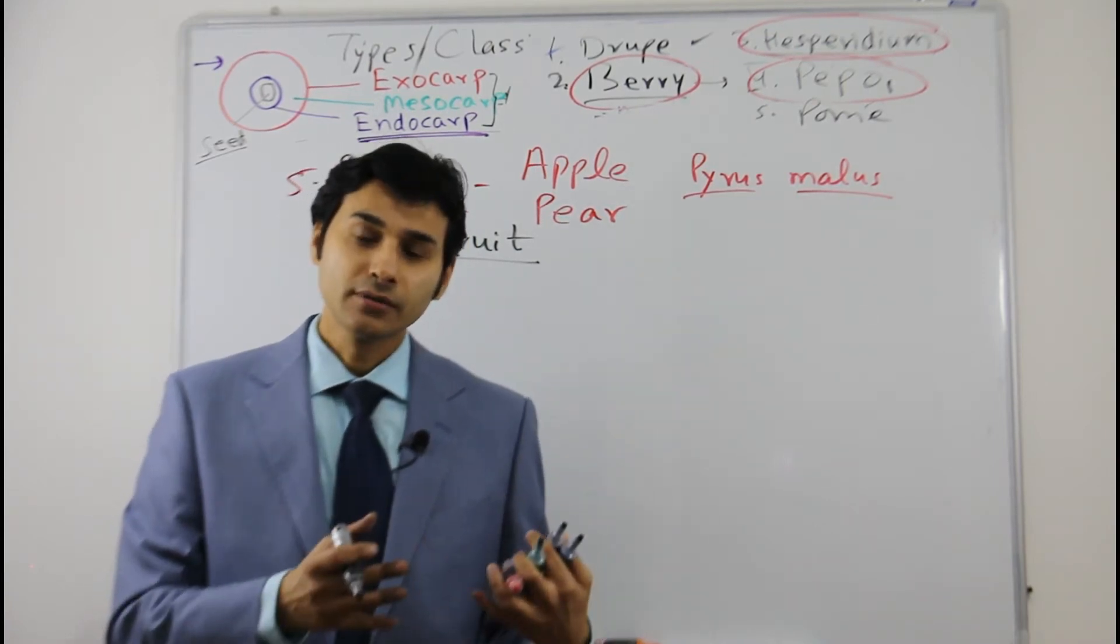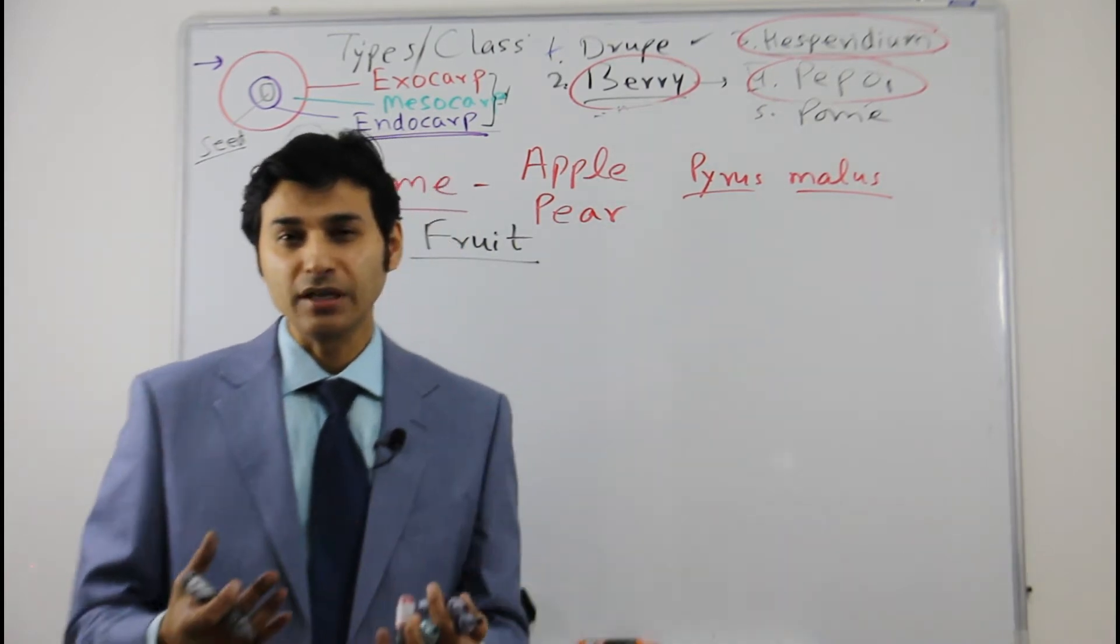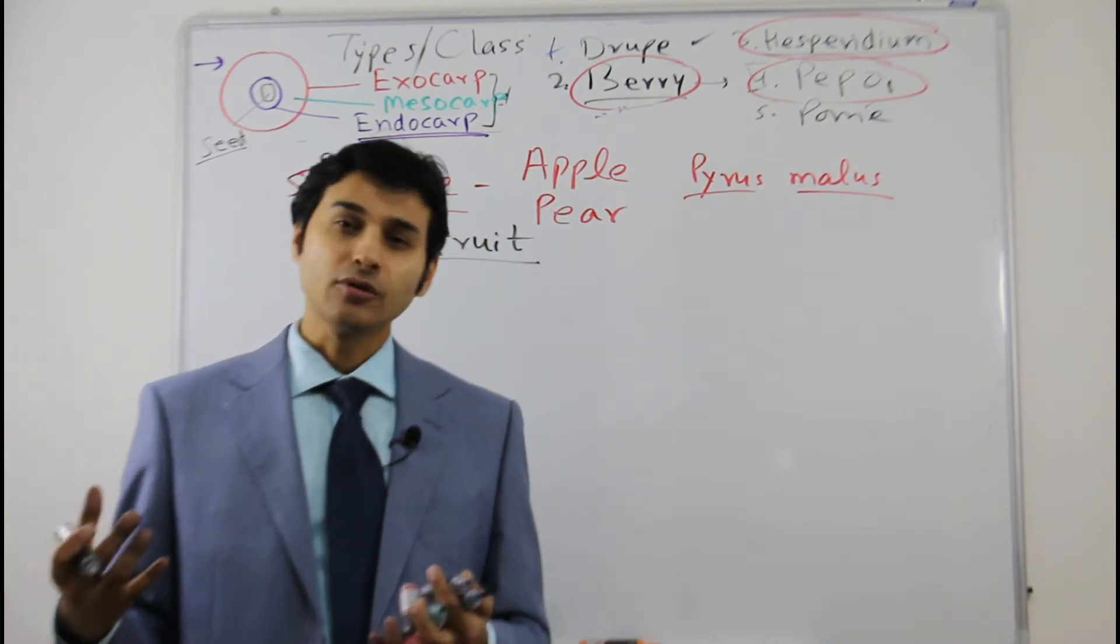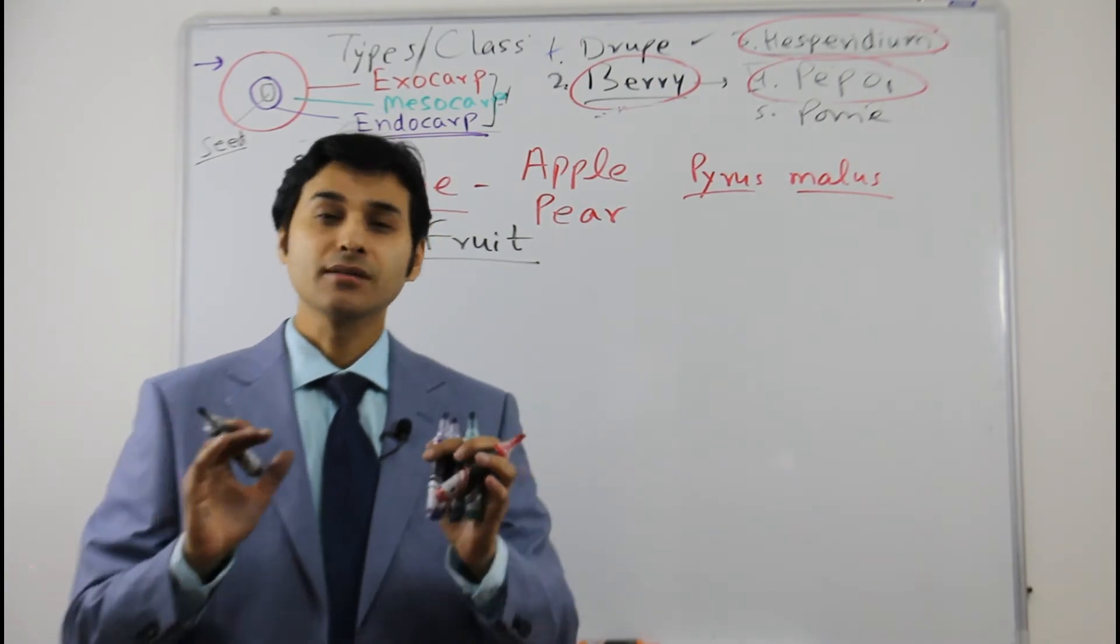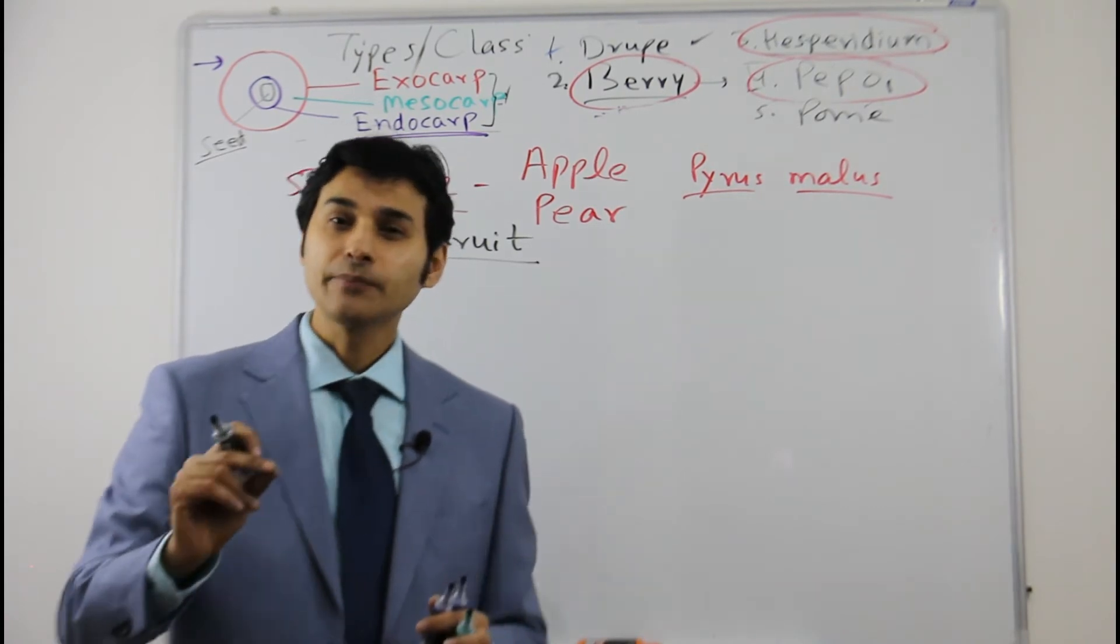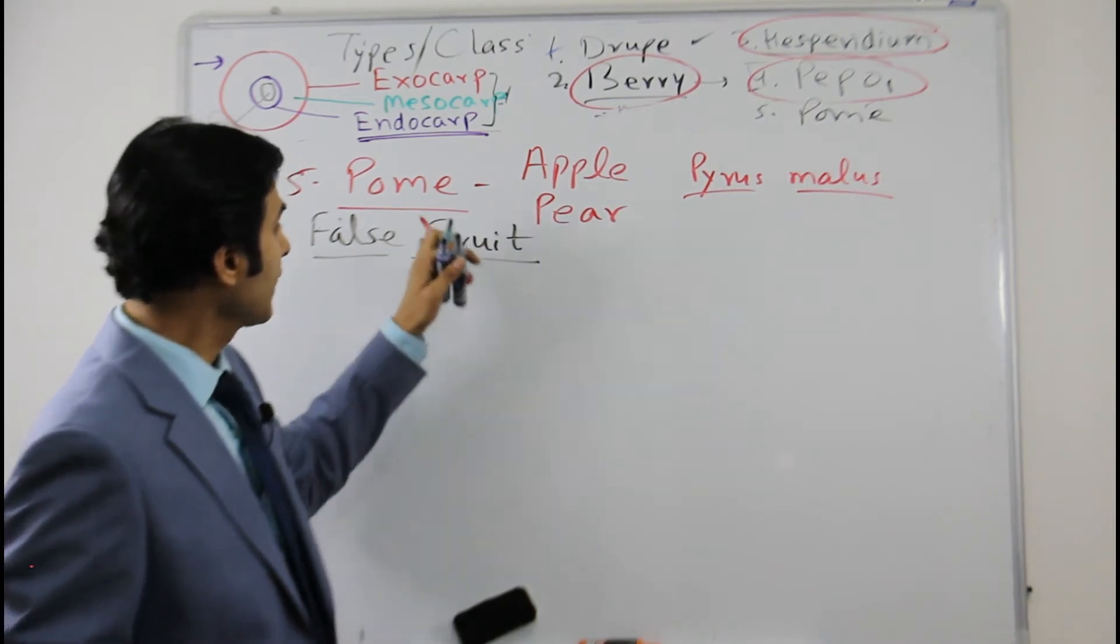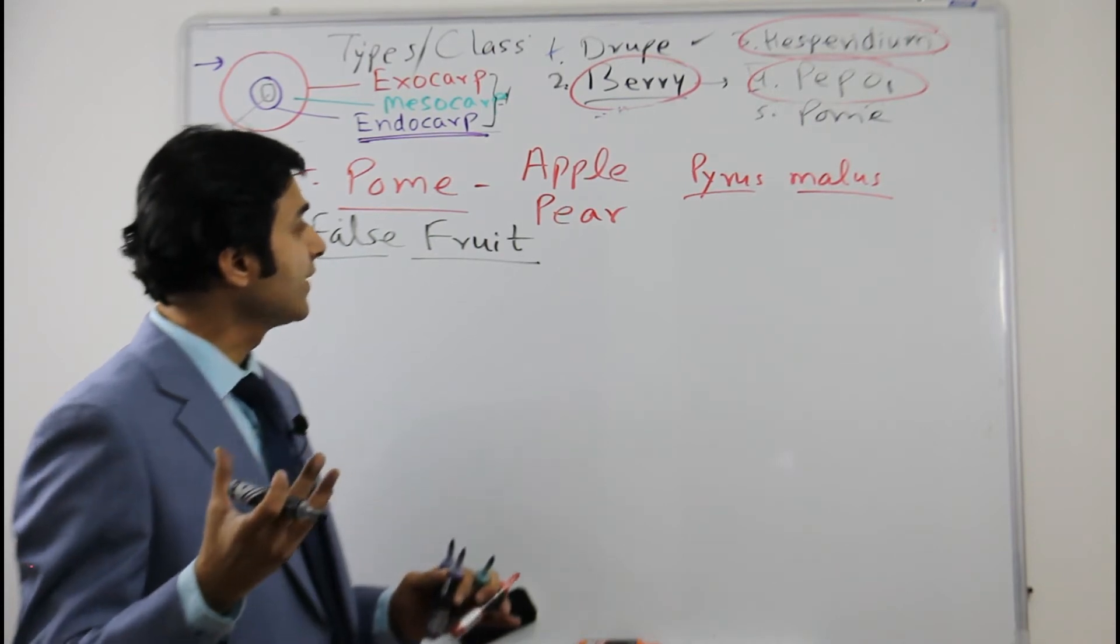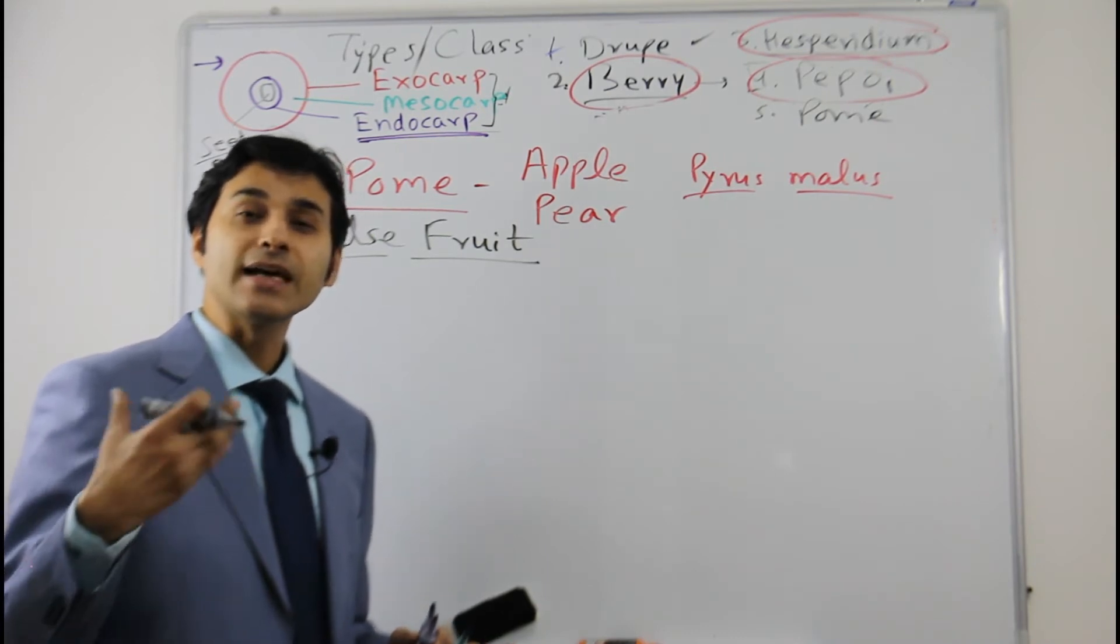So fruit is basically ovary. So any part which is developing not from the ovary means sometimes ovary also has some other accessory organs which help to protect the seed inside. Seed will be inside ovary, but many times, in these fruits like pom, the fruit is the receptacle. The major part of the fruit is the fleshy thalamus or receptacle.